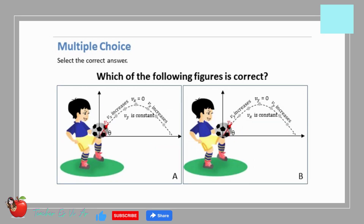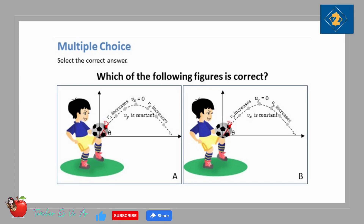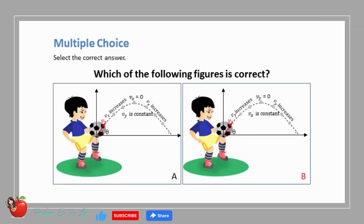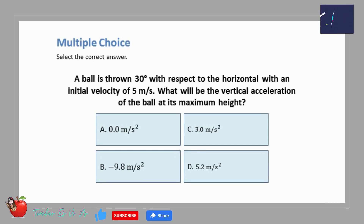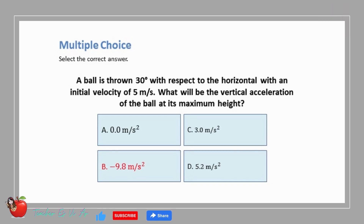Multiple choice — select the correct answer. Which of the following figures is correct? The correct answer is B. Multiple choice — select the correct answer. A ball is thrown 30 degrees with respect to the horizontal with an initial velocity of 5 meters per second. What will be the vertical acceleration of the ball at its maximum height? A. 0 meters per second squared. B. Negative 9.8 meters per second squared. C. 3.0 meters per second squared. D. 5.2 meters per second squared. The correct answer is B: negative 9.8 meters per second squared.